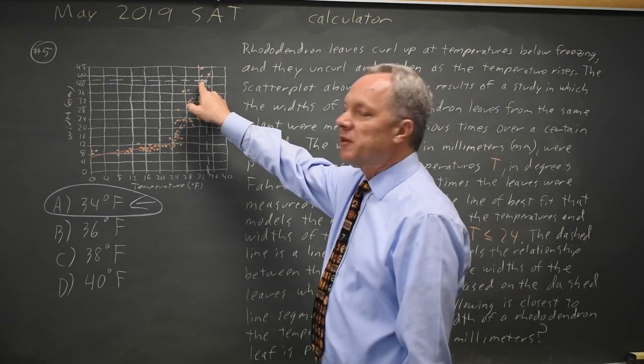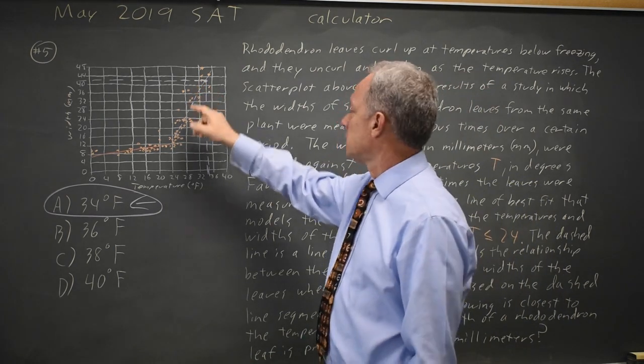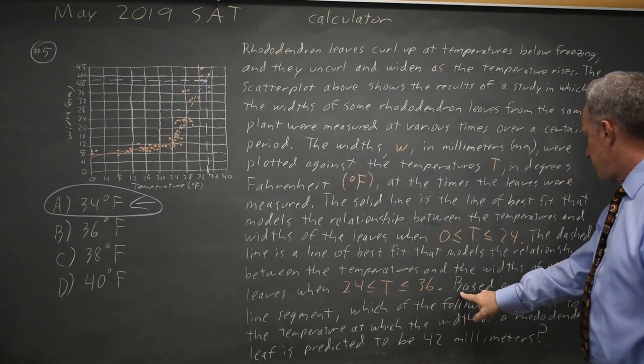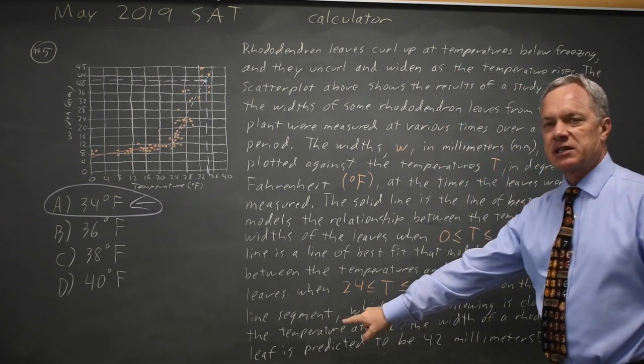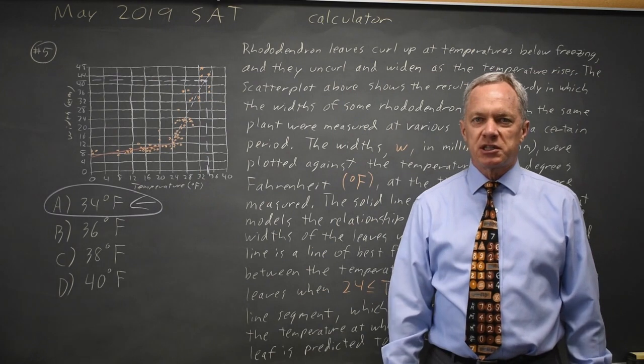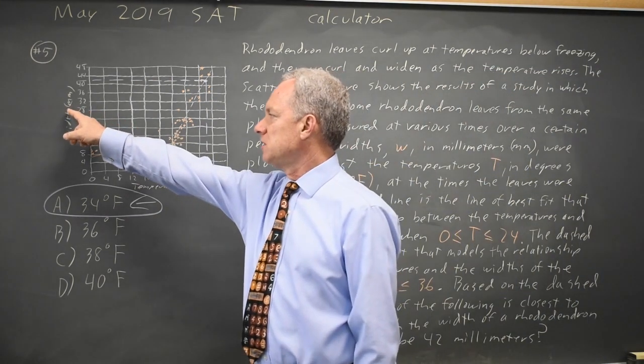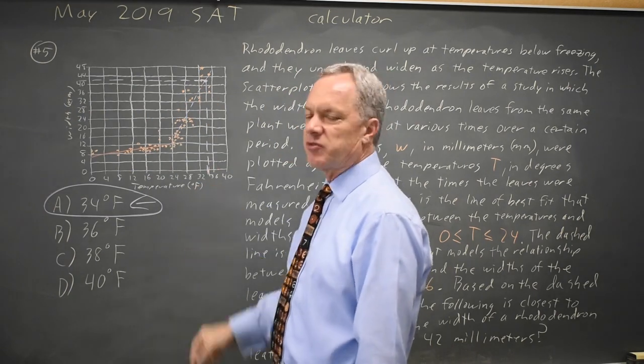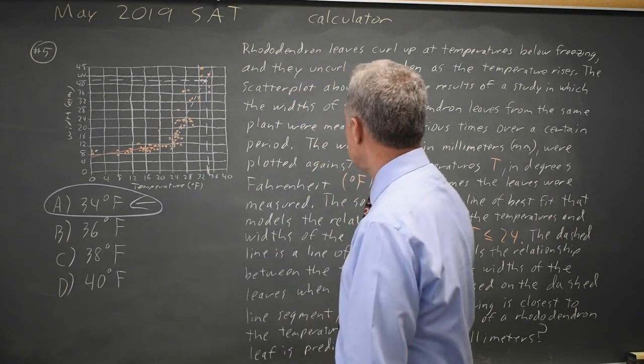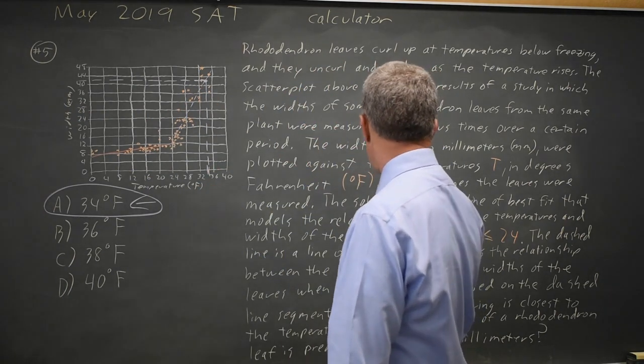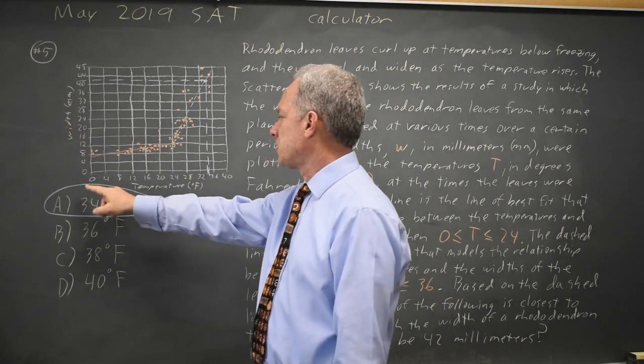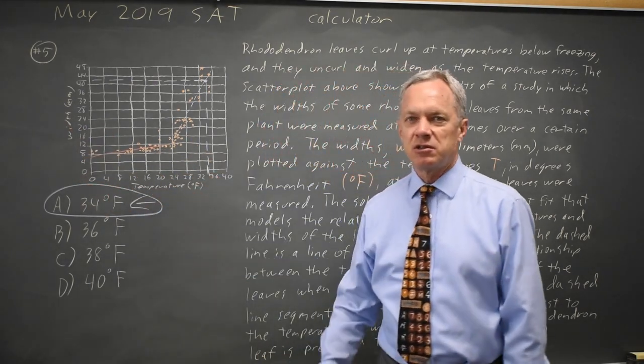We are not looking for specific points. We're looking for, in their words, based on the dashed line segments. You only look at the prediction from the dashed line segment, and they give us a y-value and ask for the corresponding x-value under our normal labels, although in this case it's our w-value width, and they're asking for the t-value temperature.